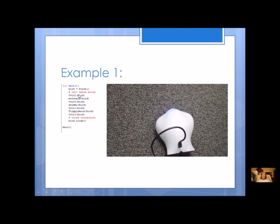Here's just an example of a really simple dance. I've got four different dance moves: twirl, moonwalk, shimmy, and fluffy dance. I've decided on an order — I'm going to use twirl several times. I start with my object call and end with close.